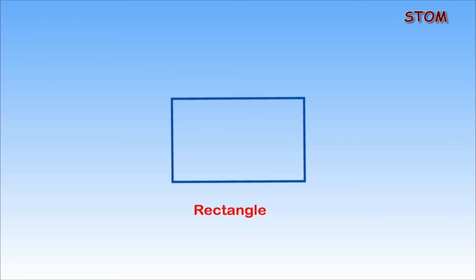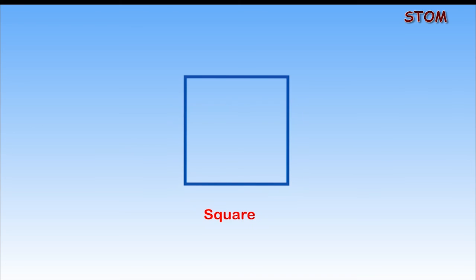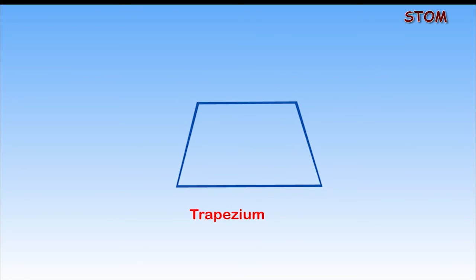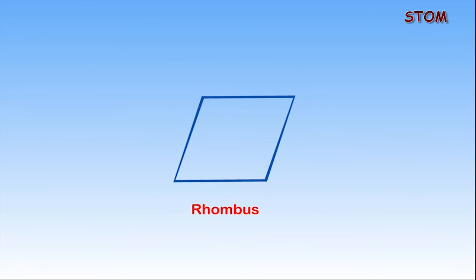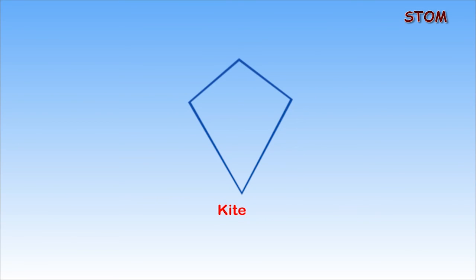For example, a rectangle has four straight sides. The square also has four straight sides. The trapezium has four straight sides, and a rhombus also has four straight sides. The parallelogram and kite are also examples of quadrilaterals because they have four straight sides.